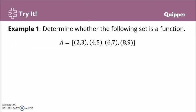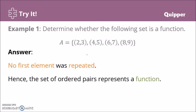Determine whether the following set is a function. Remember, if we are given ordered pairs, a set of ordered pairs, we check on the first element. There should be no repeated first element to be a function. Let's check. We have two, four, six, eight. Oh, they are unique. So our x-coordinates are all unique, none are the same. Therefore this is a function. No first element was repeated, hence the set of ordered pairs represents a function.